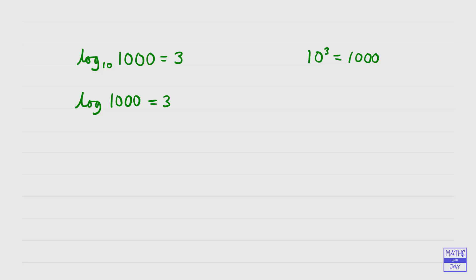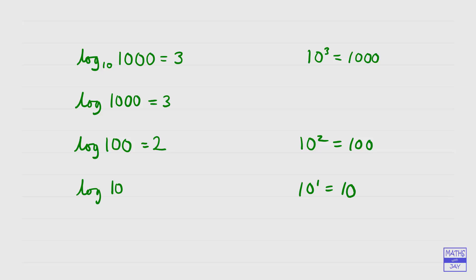Let's do a few more in base 10. Log to base 10 of 100 — because I haven't written the base, we know it's 10, and 10 squared equals 100, so log of 100 is 2. And how about log of 10? Well, 10 to the power of 1 is 10, so log of 10 is 1. And let's do a root: log of the square root of 10. We're looking at 10 to the power of something equals the square root of 10, which is a power of a half. So log of root 10 is one half.